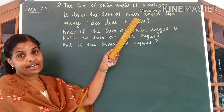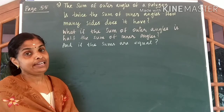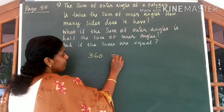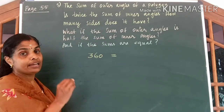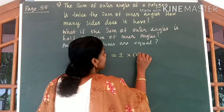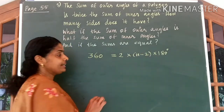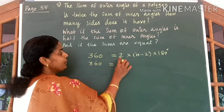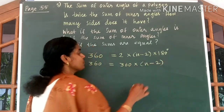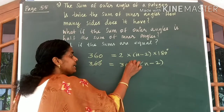It is given that the sum of outer angles is twice the sum of inner angles. We know the sum of inner angles of a polygon is always (n minus 2) into 180 degrees. Now let us use the given condition. I can write 360, which is the sum of outer angles, is equal to twice the sum of inner angles — that is 2 into (n minus 2) into 180 degrees. We have just substituted the formula. Next step: 360 is equal to 2 into 180, which also gives you 360. So we can write 360 into (n minus 2). You can see 360 is common on both sides, so let us cancel 360 on both sides.